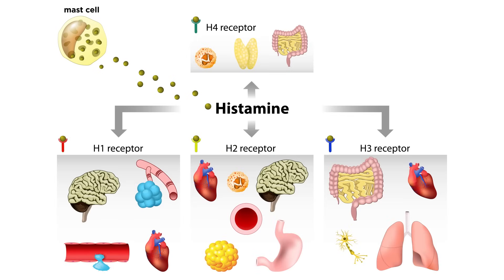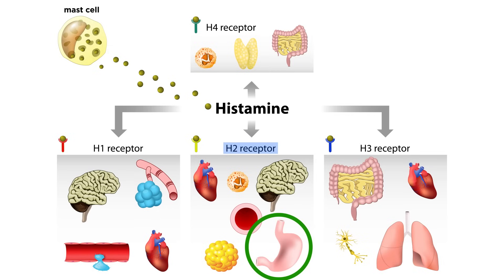It is worth noting at this point that H2, H3, and H4 receptor isotypes have also been documented, with H2's physiological function much better understood than the other two. Although H2 mediates some immunological functions, H2's primary physiological function is to aid gastrointestinal motility and promote gastric secretion. To remain in the context of allergies, we will focus on H1-related antihistamines in this tutorial.